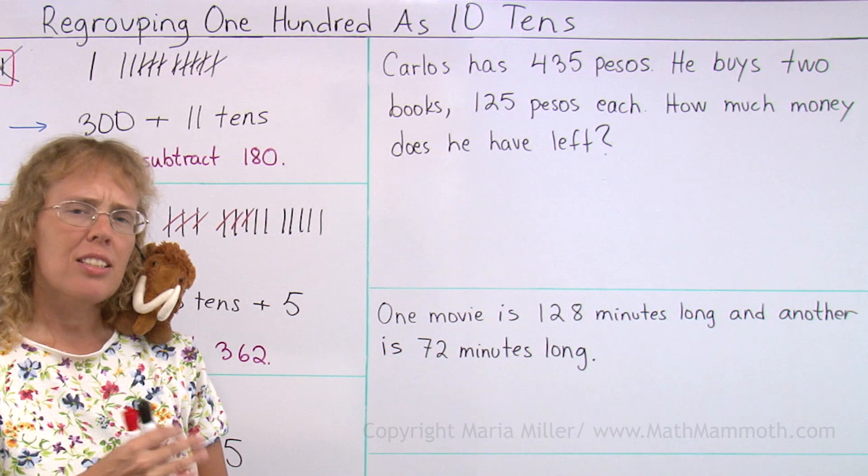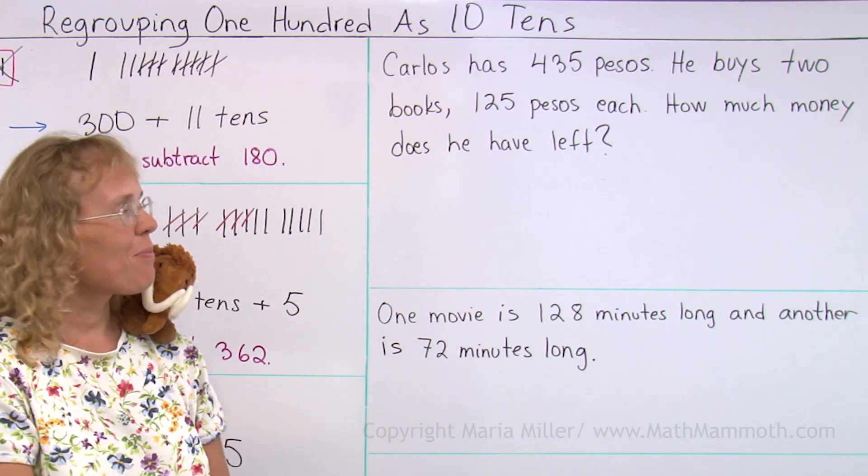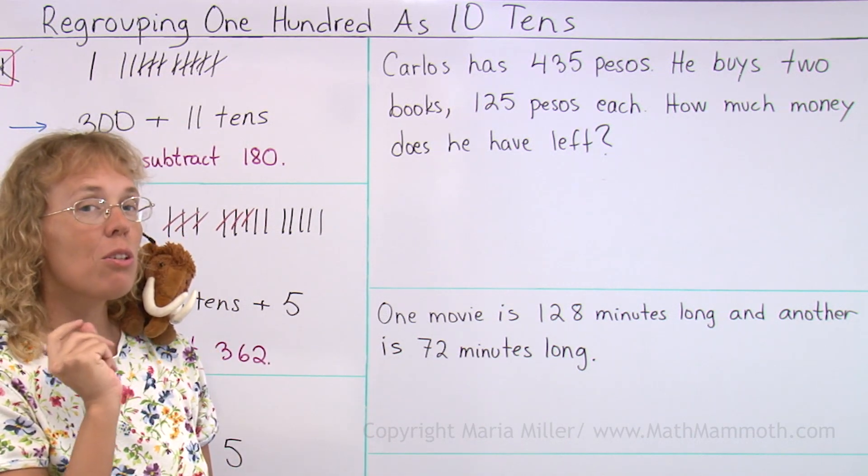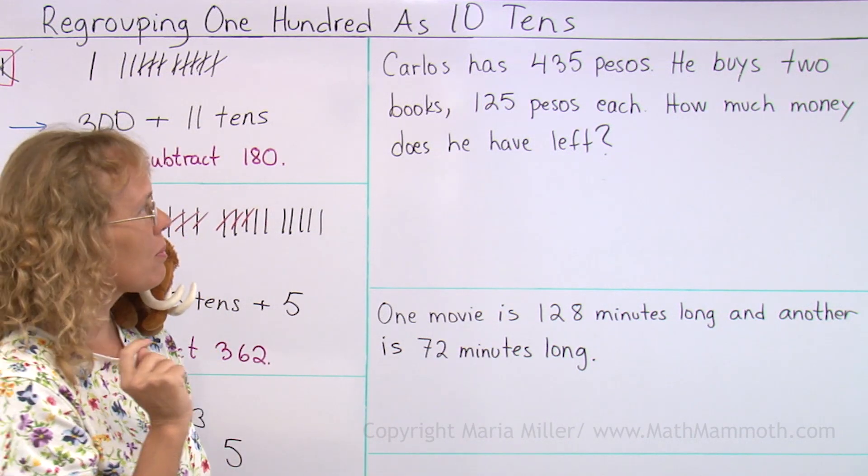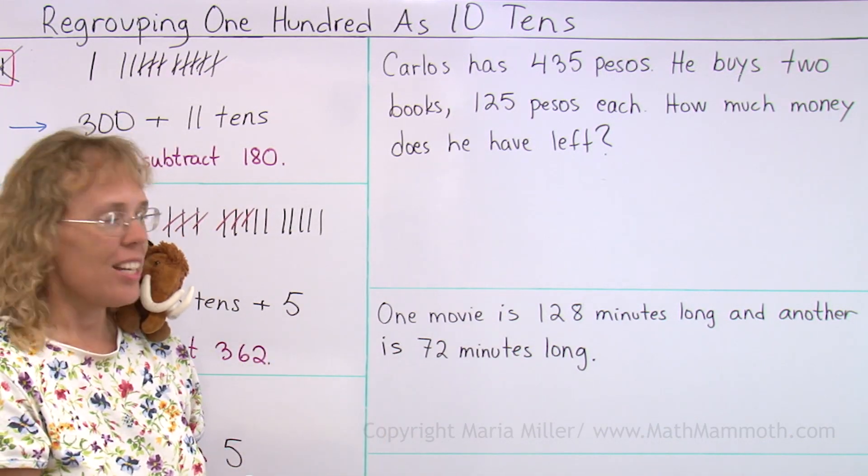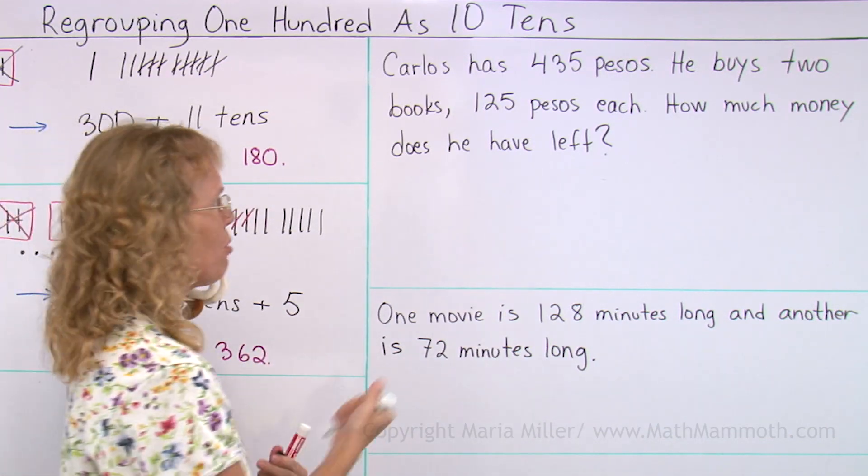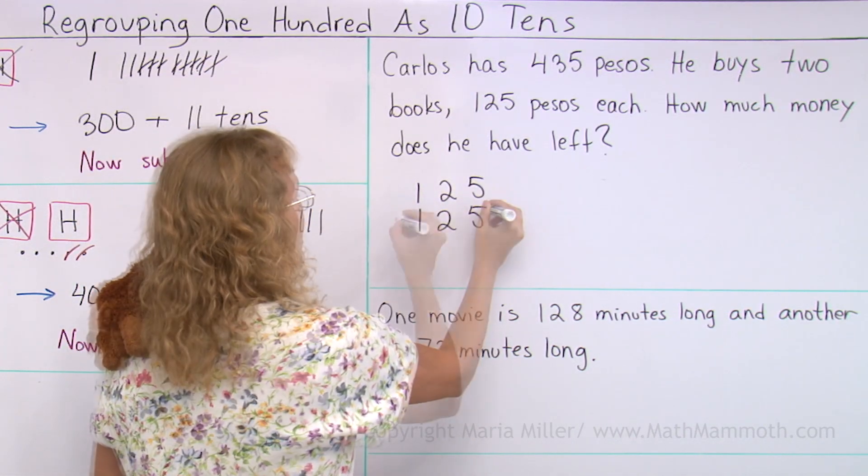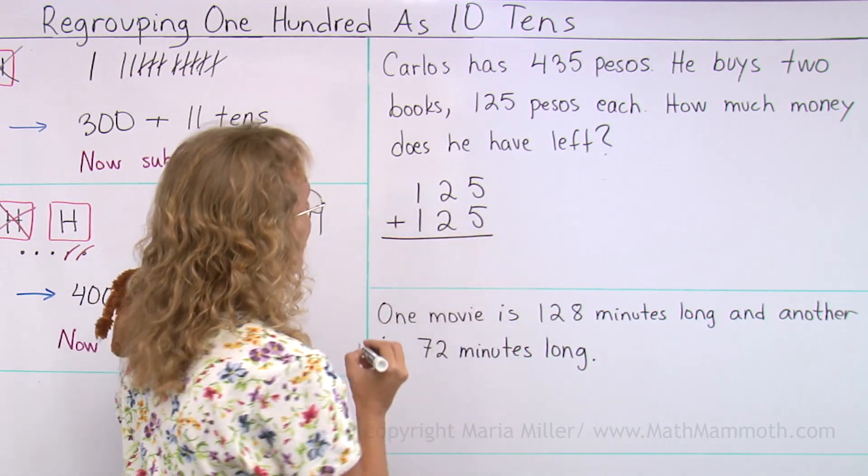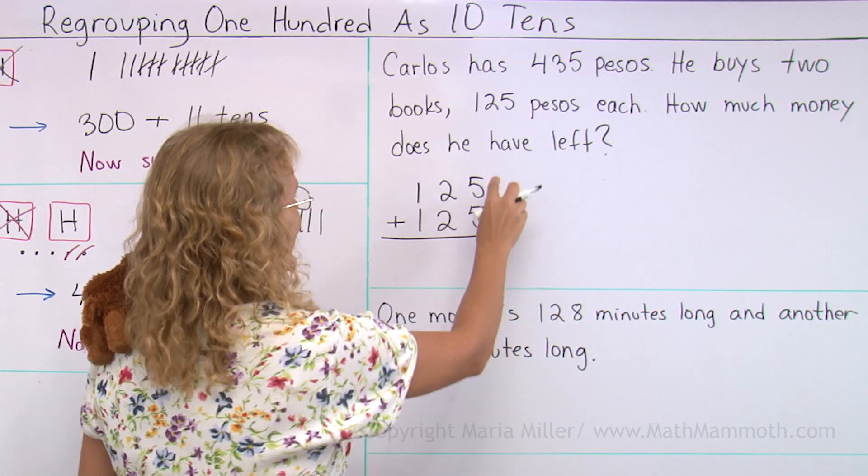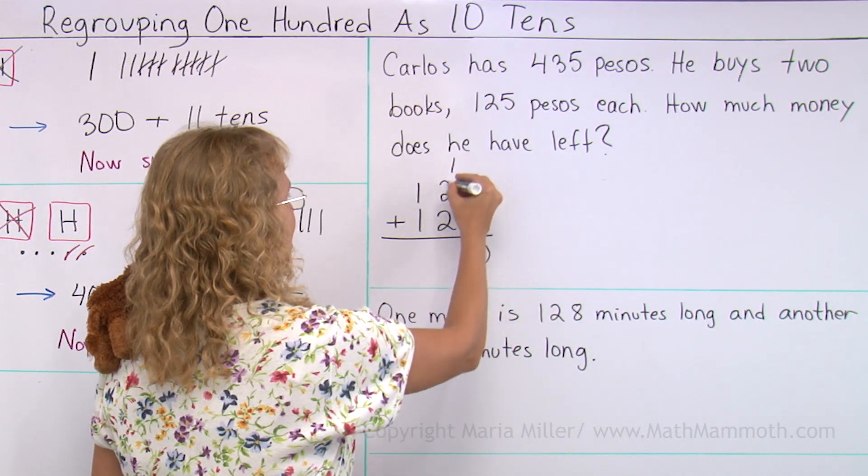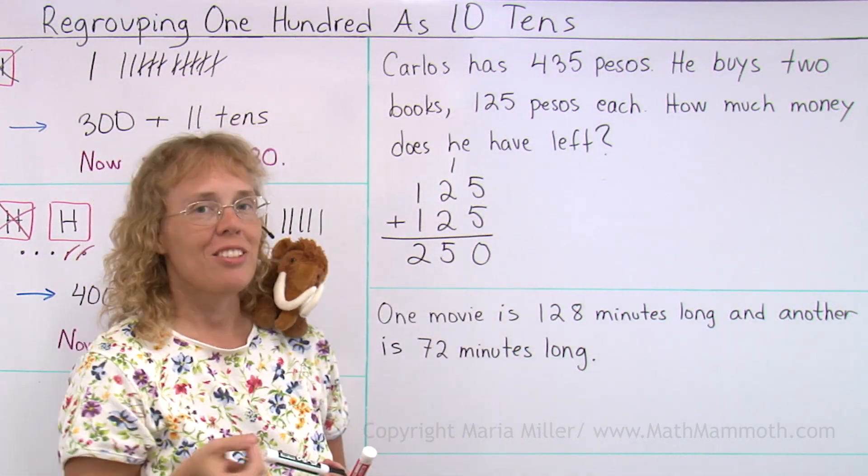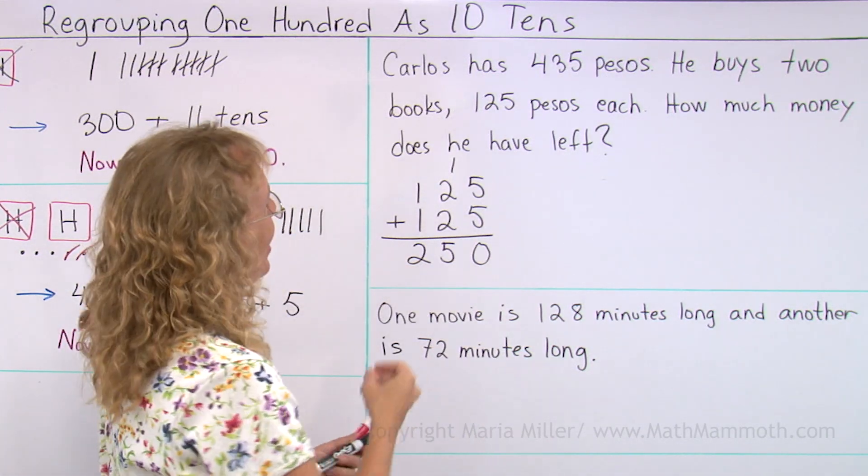Okay, Carlos has that much money, he buys two books, how much does he have left? That's a subtraction problem, right? But he buys two books, so we need to find the total price of those two books, and for that I will add. 125 and 125 - I'm gonna add these to find the total price of those two books. Five and five is ten, then over here five, and here two. So the total price is 250 pesos.